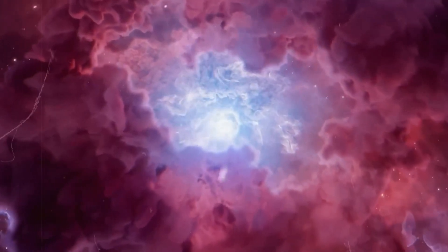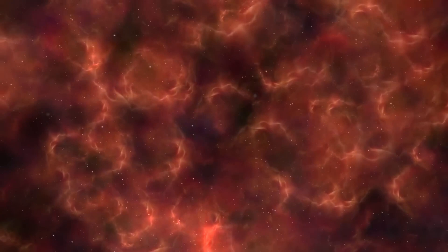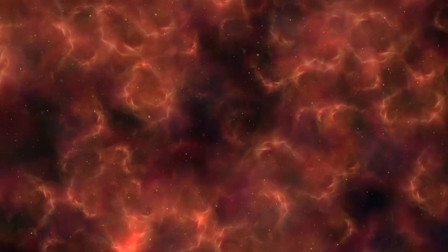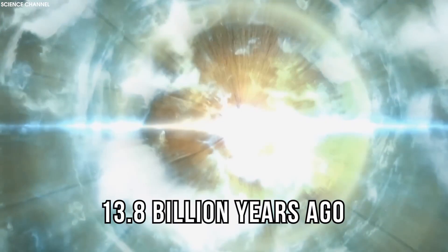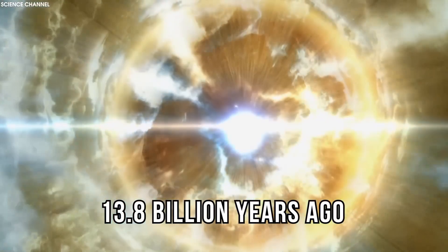This light has been traveling a long time. For reference, it takes roughly 8 minutes for light to travel from the sun to your eye. Light from Proxima Centauri, the nearest stellar neighbor of the sun, takes a little over 4 years to reach us here on Earth.